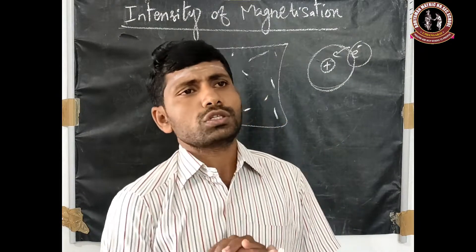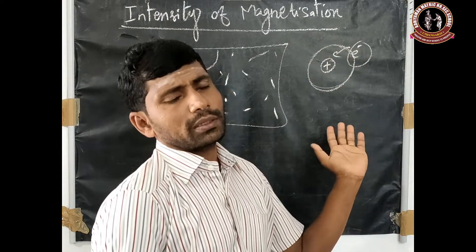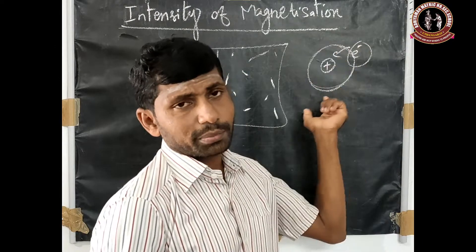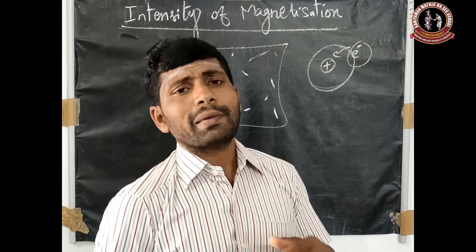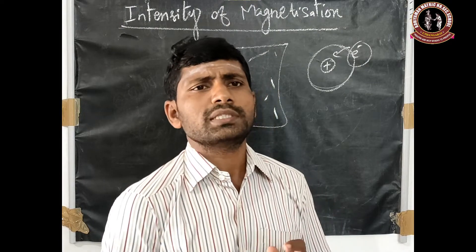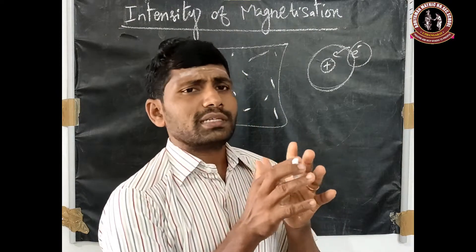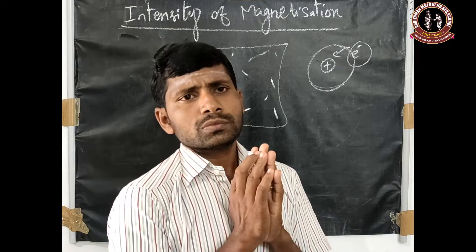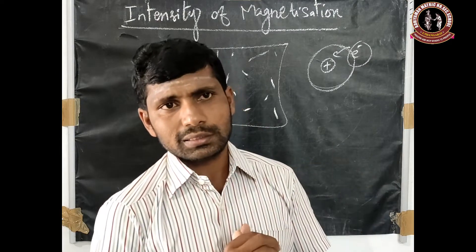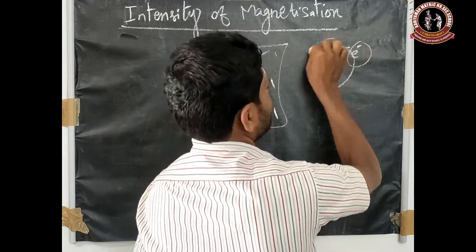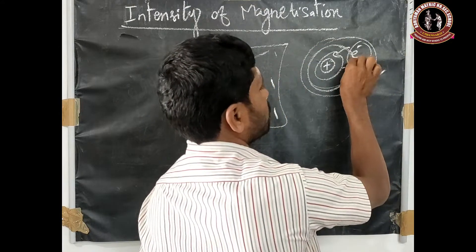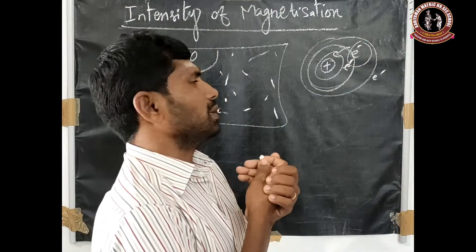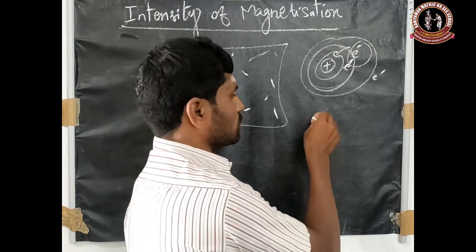The orbital motion of the electron produces an orbital magnetic moment, which is a vector quantity. Each orbit has a different magnetic moment, and these are in random directions. Therefore, the net magnetic moment per unit volume of the material is zero.